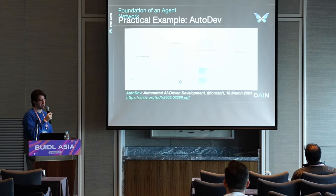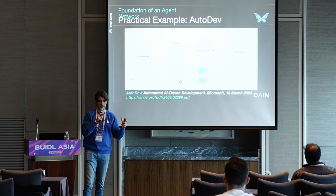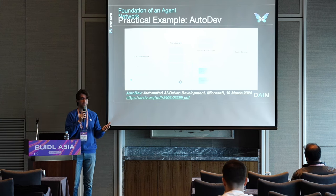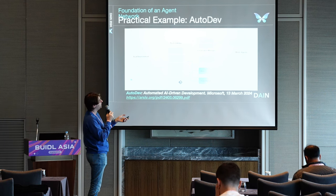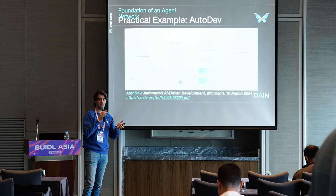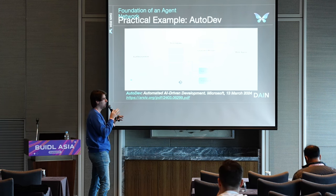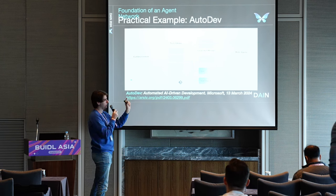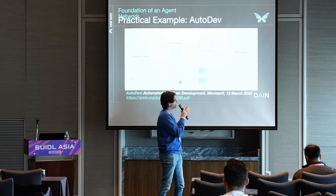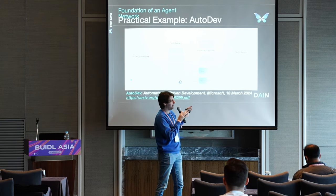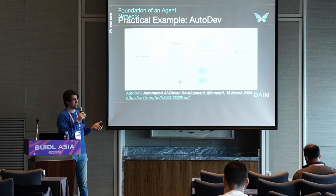Let's see some practical examples of a multi-agent system. This is AutoDev, released two weeks ago from Microsoft — a paper describing how they can create AI-driven development. For software engineers, this is basically the future: having multiple agents delegating different tasks in the process of developing a project. They demonstrated that leveraging multi-agent systems, they can actually complete more complex tasks. The user provides rules, actions, and objectives; there's an entire process with a conversation manager and an orchestrating agent managing other agents in multi-agent systems.